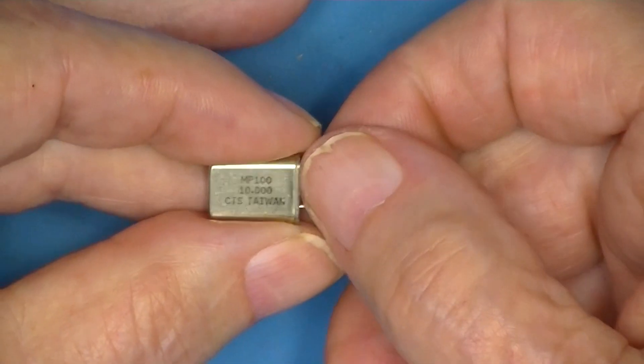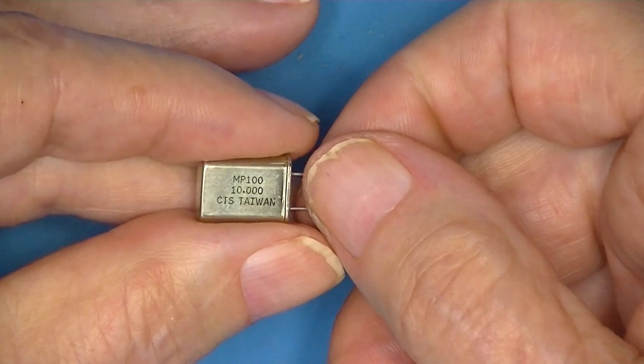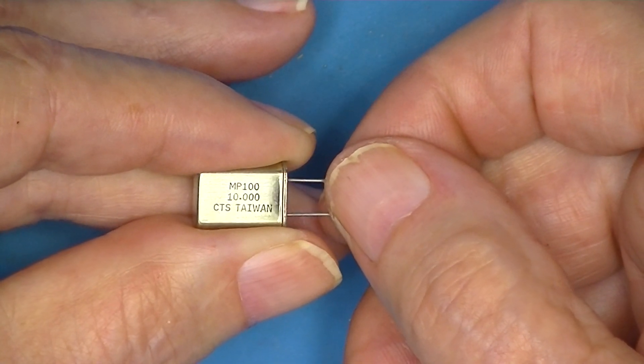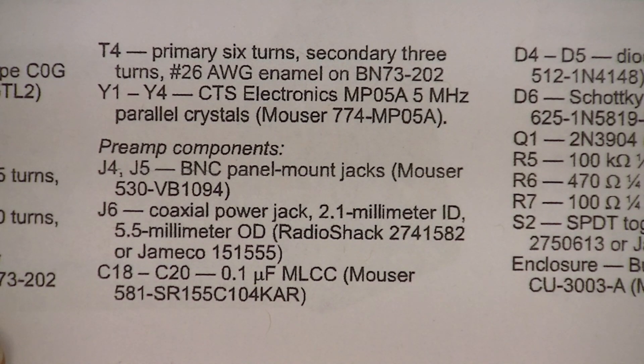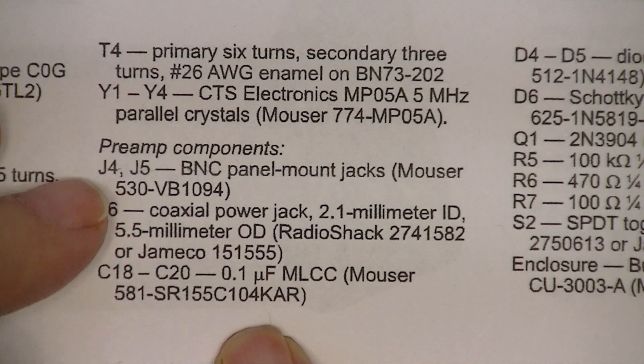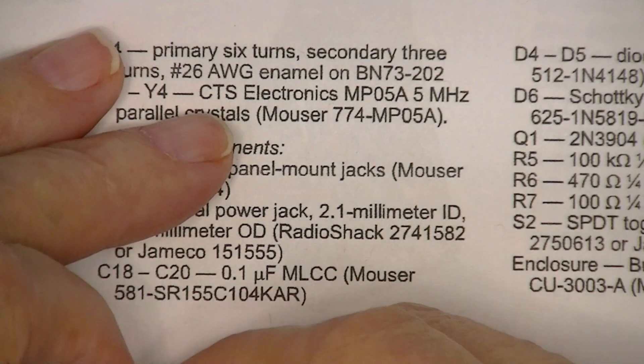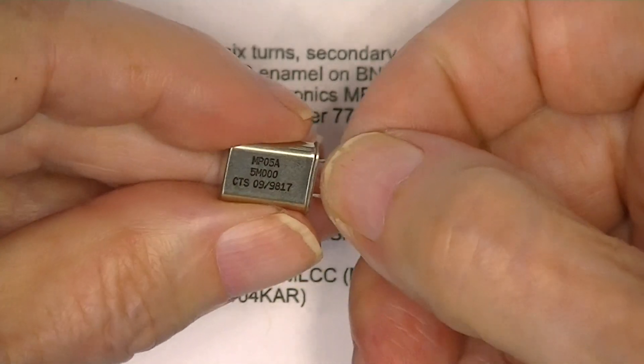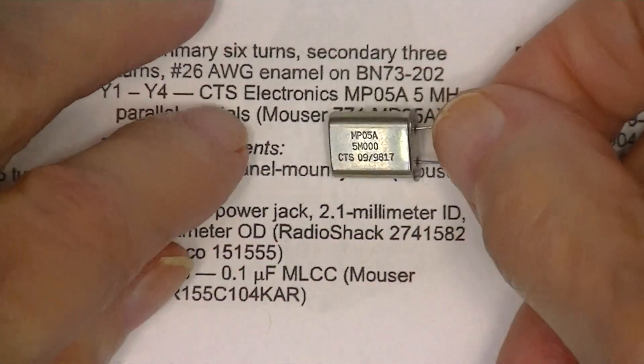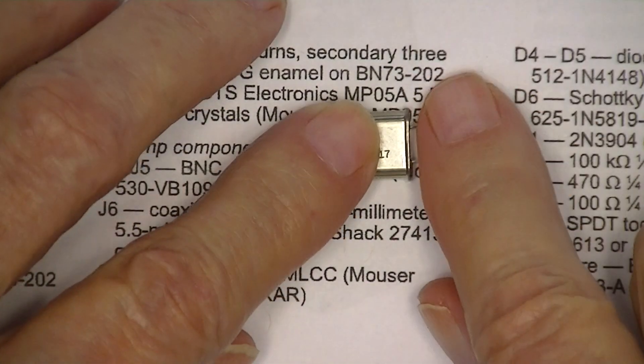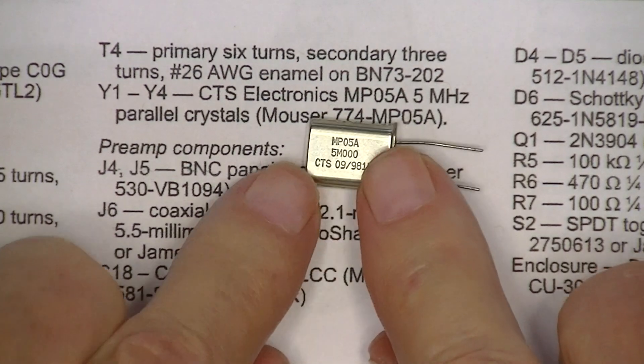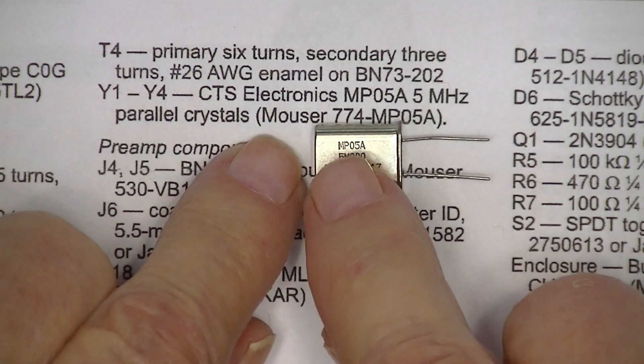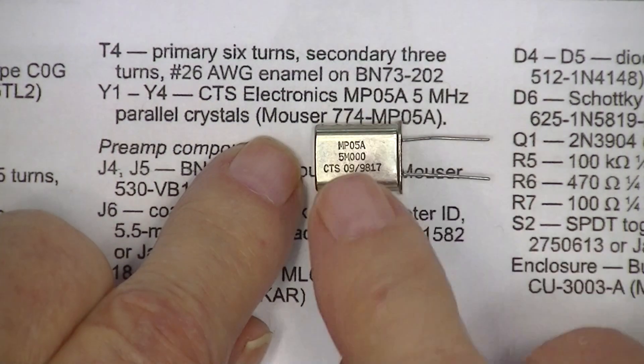I found them in my junk box. Until I sat down to make this video, I didn't realize this—the crystals I had on hand that I'm going to use to build the 5 megahertz amplifier, look at this, they are CTS MP05A, exactly what's specified.